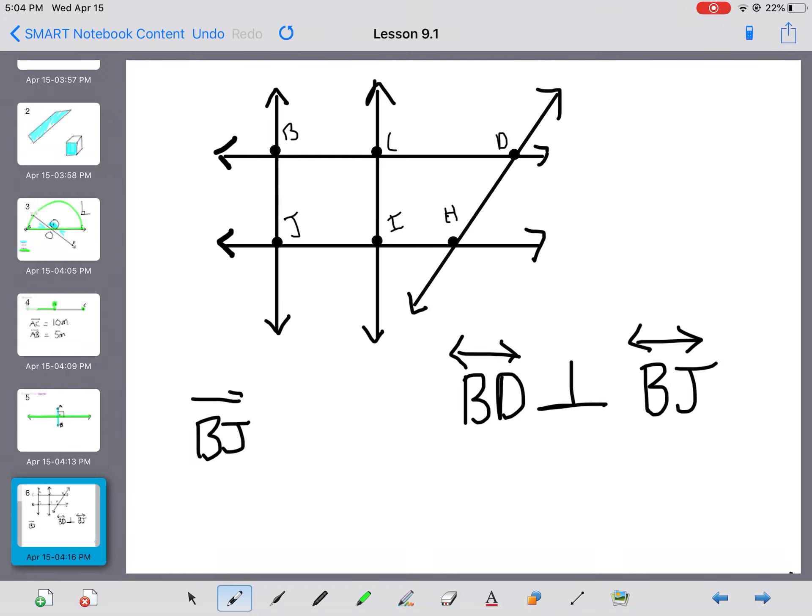But I could also talk about parallel lines. So I could say line BJ, notice my arrow, is parallel to line CI. So parallel lines are two lines that are going the same direction that will never, ever, ever intersect. So for example, CI and HD are not parallel. They have not actually intersected. But if we were to think that our line is continuing on both of these, they will eventually intersect. So parallel lines never, ever intersect.